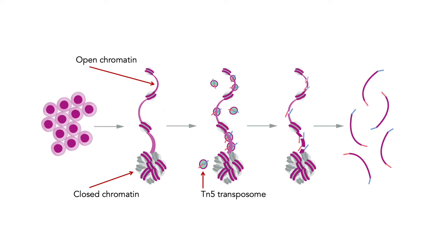The method works like this: you have your open chromatin and closed chromatin, and you bind this TN5 transposome to that DNA. That particular moiety only binds to the open chromatin — if the DNA is all tangled up in a ball it can't get to it. The transposome then cuts the DNA, so you end up with fragments only from that open chromatin.